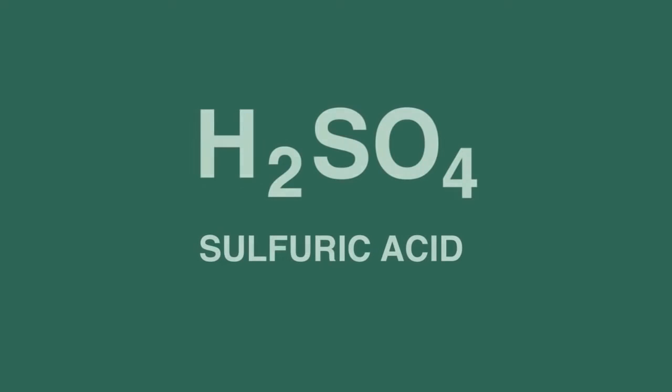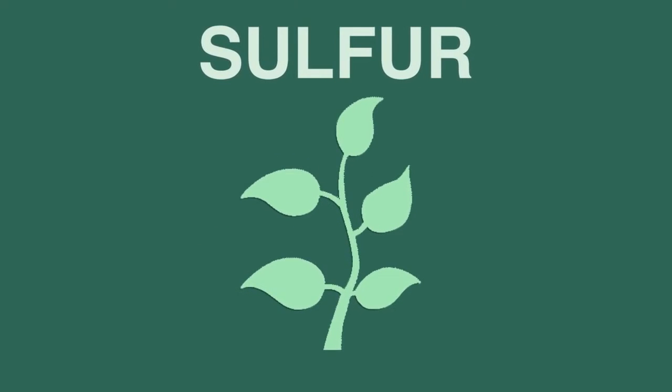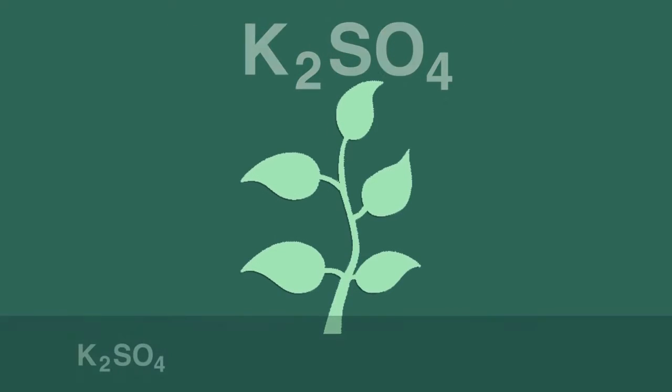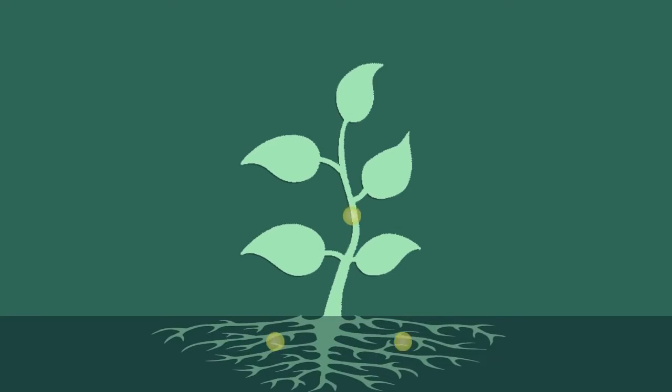We'll consider sulfuric acid first. Plants need a little sulfur to grow. They obtain it from sulfates, for example potassium sulfate, found naturally in the soil. The sulfates are taken up by the plant's roots, and sulfur atoms become bonded to carbon atoms in the leaves' proteins.